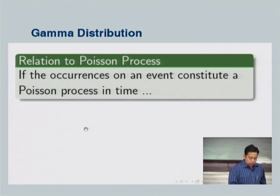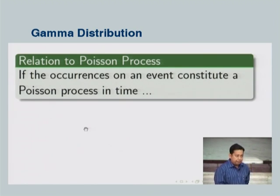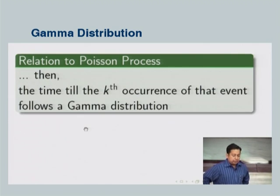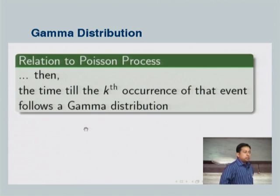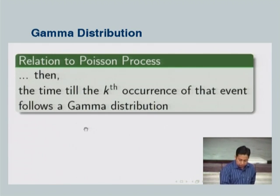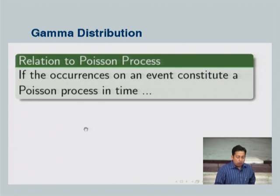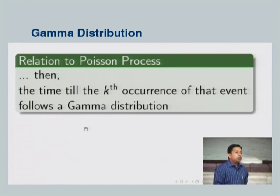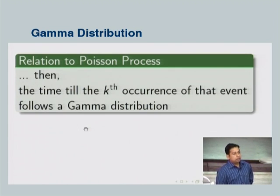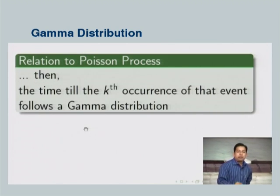If occurrences of an event follow a Poisson process — for example, how many earthquakes of a given magnitude over the next 10 years — then the time until the kth occurrence, say the second earthquake, follows a gamma distribution. The time to the kth occurrence is a continuous random variable, so there is no problem in it having a gamma distribution, which we can prove.